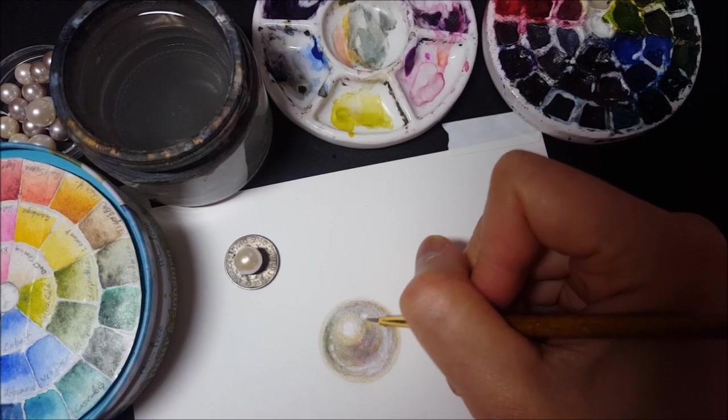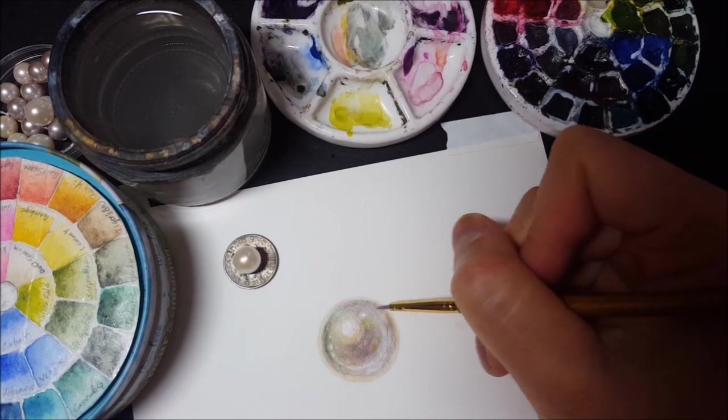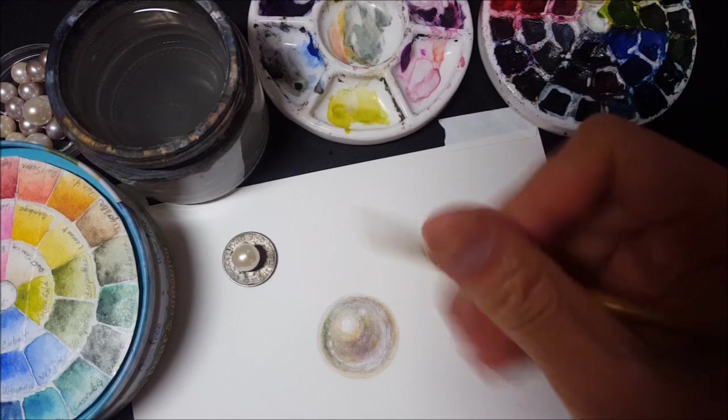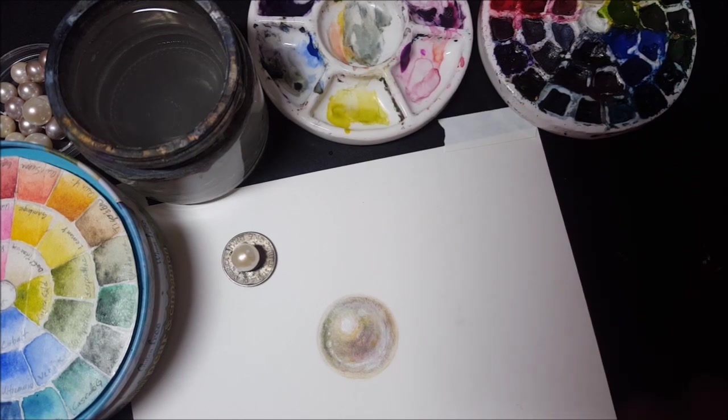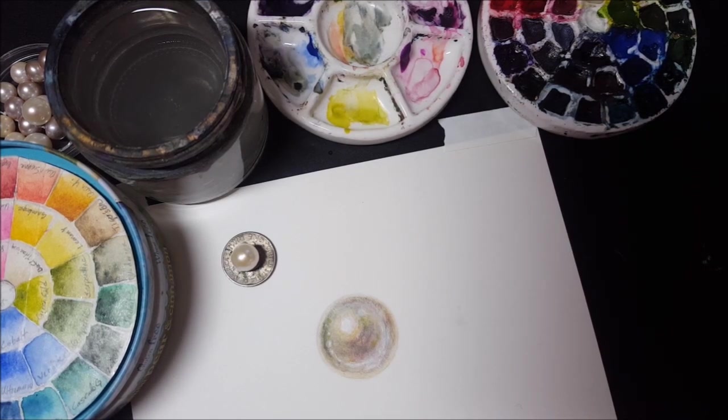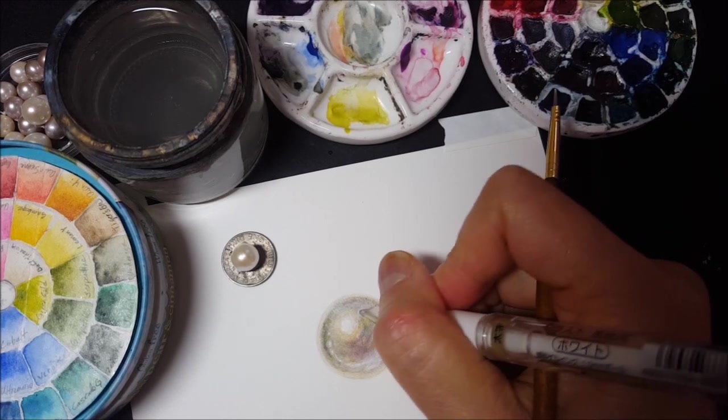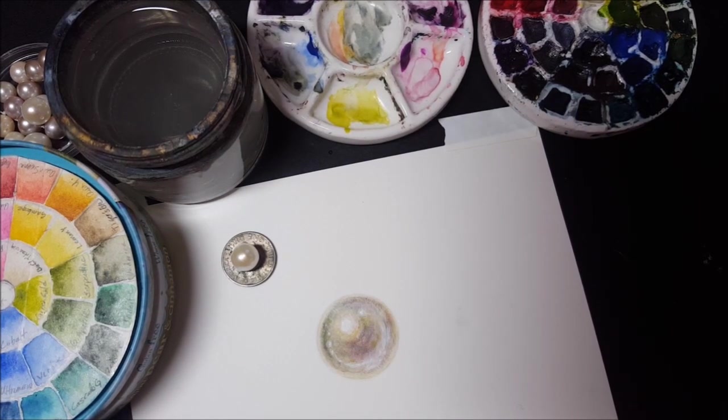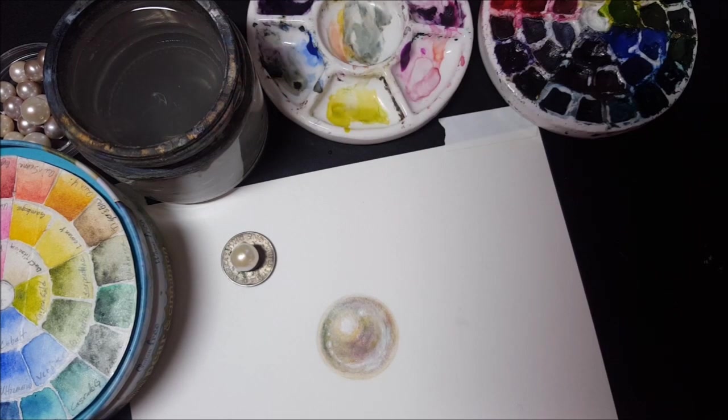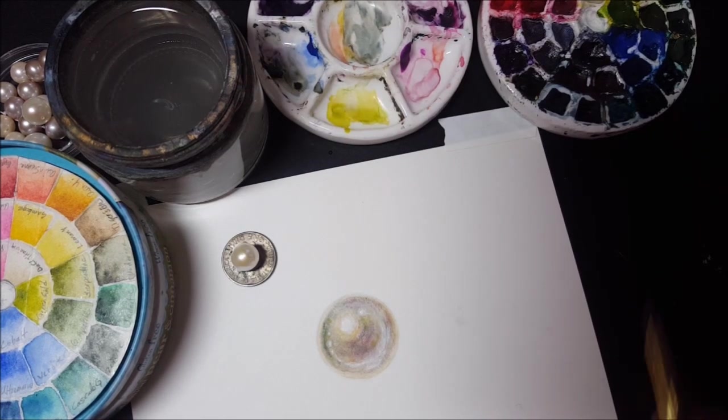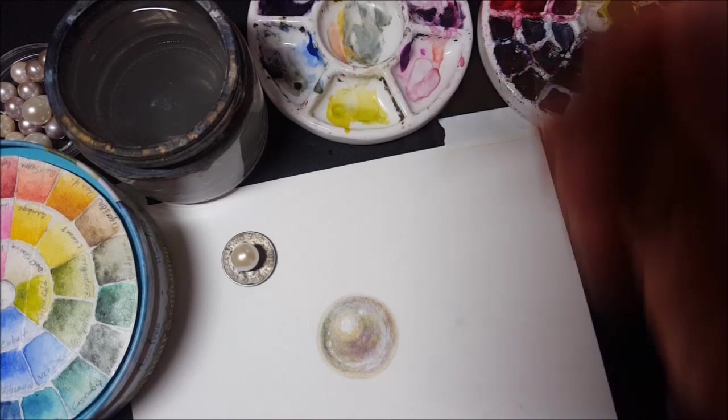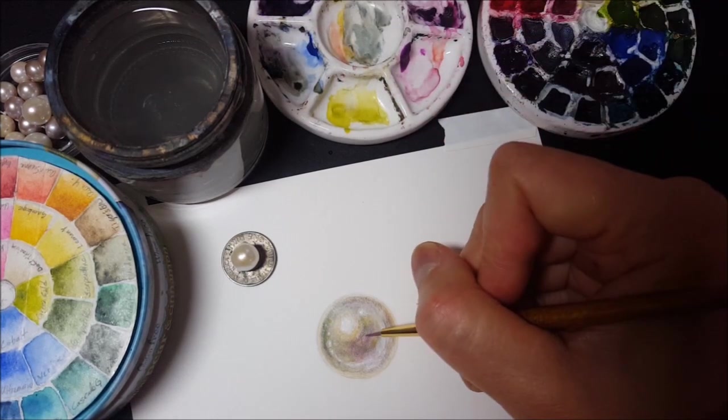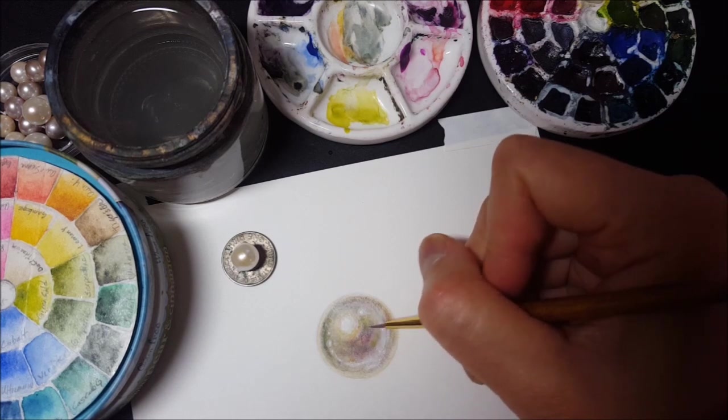The key to the iridescent look is to have all these varied colors that you saw me prep and use. You know, this pink and green and blue and purple and oranges. All these colors. And instead of just blending them one on top of each other, I have them sort of adjacent and interweaving with each other. And that's what's going to really give you that sense of iridescence.